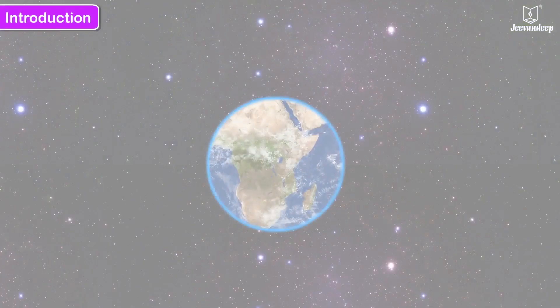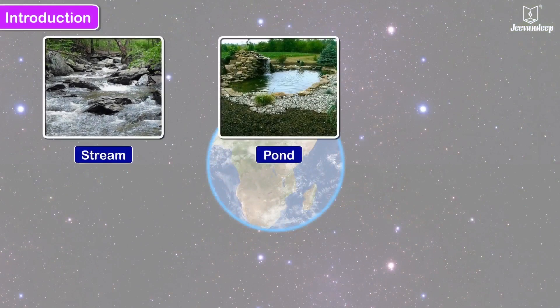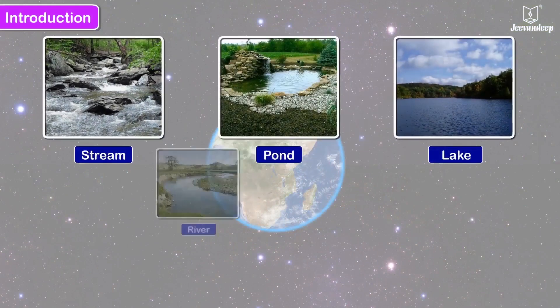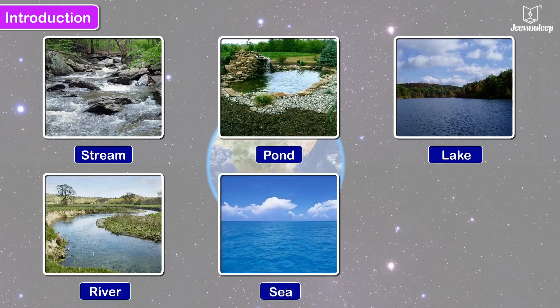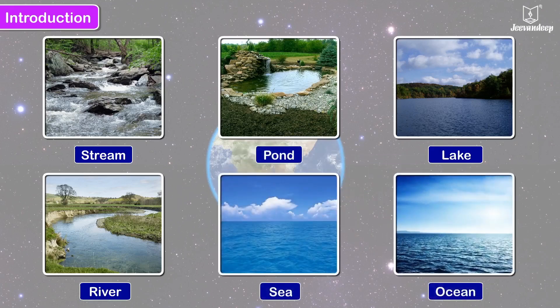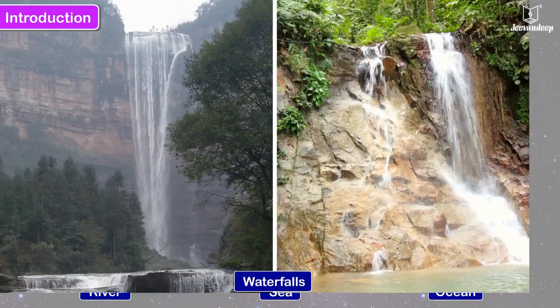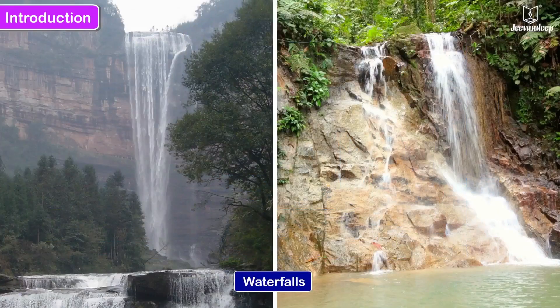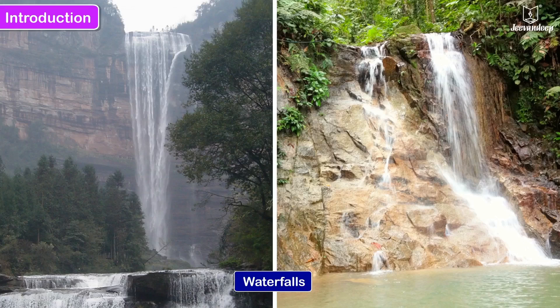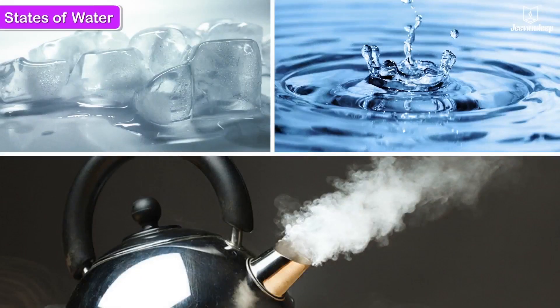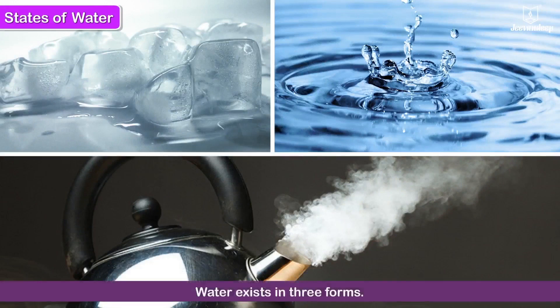Water is present on the Earth in streams and ponds, lakes and rivers, seas and oceans. We also see water flowing down in the form of beautiful waterfalls in hills and mountains. Water exists in three forms.